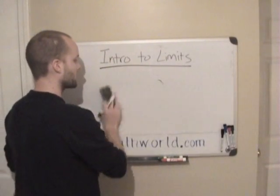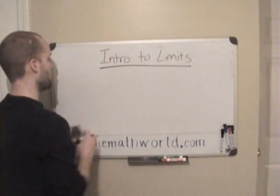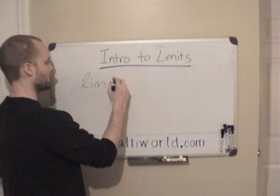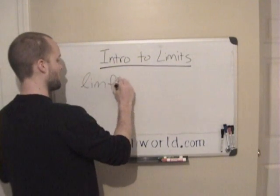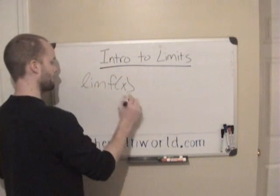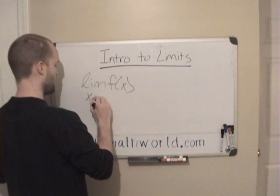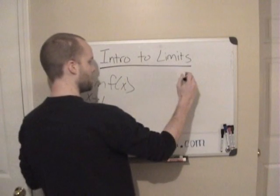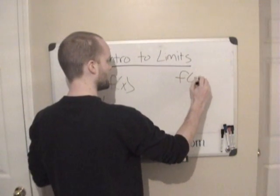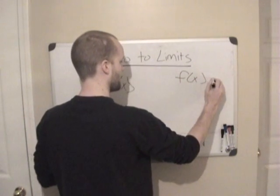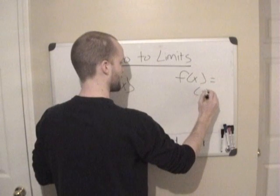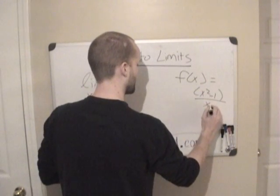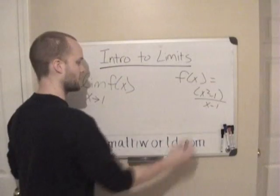The first one we're going to look at today is the limit — writing in cursive just so you see different things — of some function as x approaches 1. And this function is going to be x squared minus 1 over x minus 1.